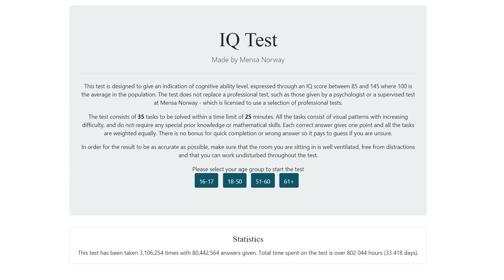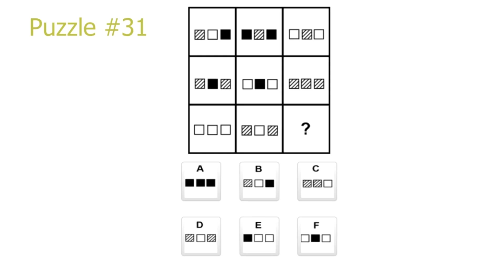However, while searching, I couldn't find a single good explanation for the old Puzzle 31. This is the old Puzzle 31. The puzzle consists of a matrix where there are three colored squares in every picture. If you want to, you can pause the video here and try to solve the puzzle by yourself.